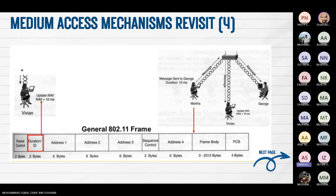Continuing the slide on media access mechanism revisited, this is the general 802.11 frame, which includes: frame control, duration ID, address one, address two, address three, sequence control, frame body, and FCS.